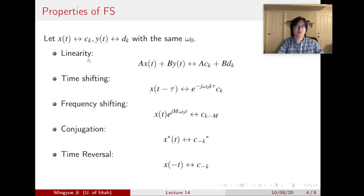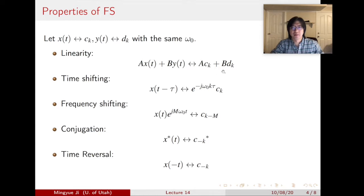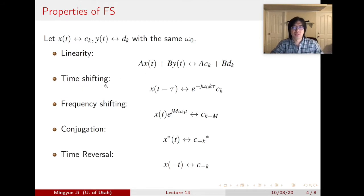The first property is the linearity property. If we do a scaled sum of x of t and y of t, we do the exact same thing in the frequency domain — everything on the left-hand side is the time domain and everything on the right-hand side is the frequency domain. If x of t and y of t do not have the same omega naught, we cannot use this property.